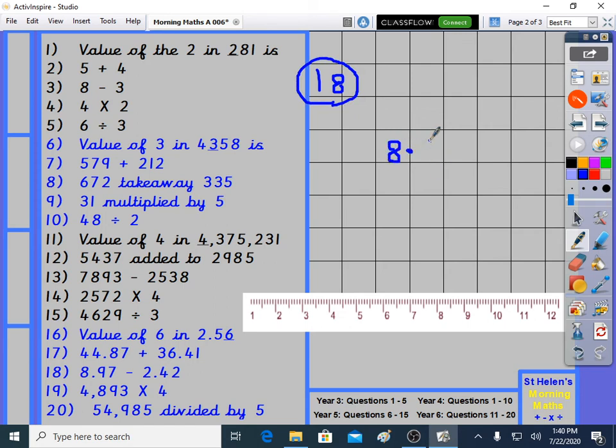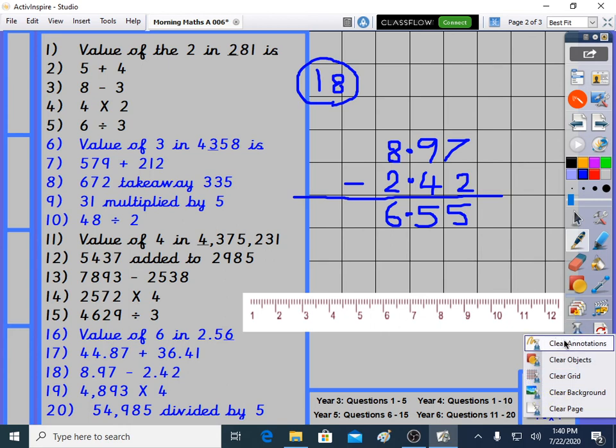And we're on question 18. Lining up is still quite easy. We're just getting used to making sure we line up this decimal point every time. 8.97 minus 2.42. It will get harder. So I'll put in the trick questions over the weeks. 8.97 minus 2.42. 7 take away 2 is 5. 9 take away 4 is 5. 8 take away 2 is 6. 6.55.